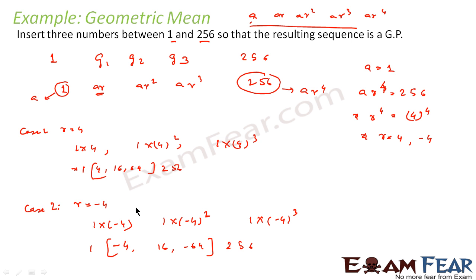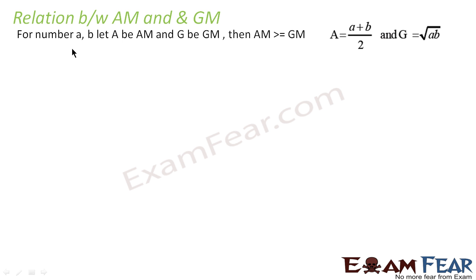Now we will learn the relationship between AM and GM for two numbers a and b. Let A be the AM and G be the GM. Then AM is always greater than or equal to GM — this is a universal fact. AM is (a + b)/2 and GM is root(ab), and A is always greater than or equal to G.